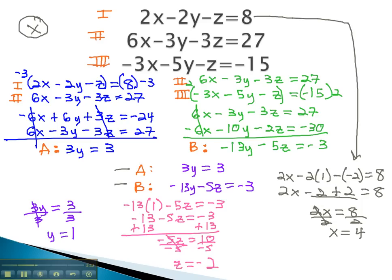We now have our solution for x, y, and z. And as usual, we'll express our answer as an ordered triplet with three numbers in alphabetical order: x, y, z. x is 4, y is 1, and z is negative 2.